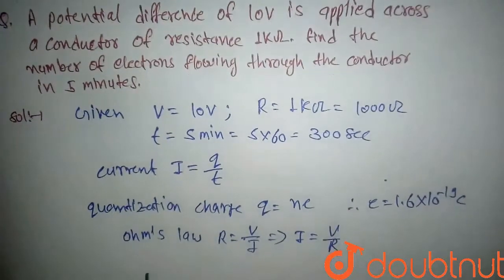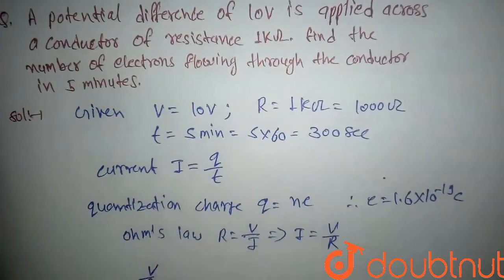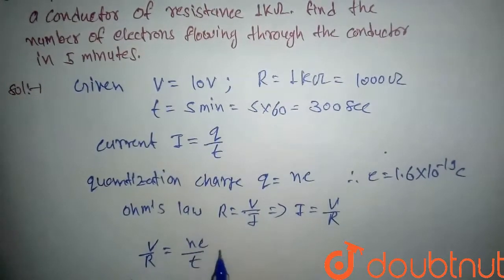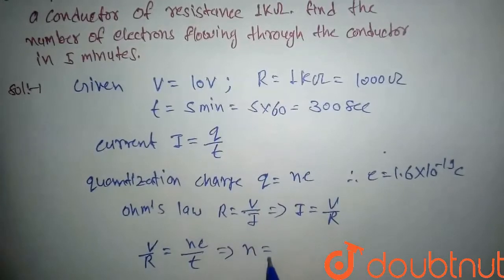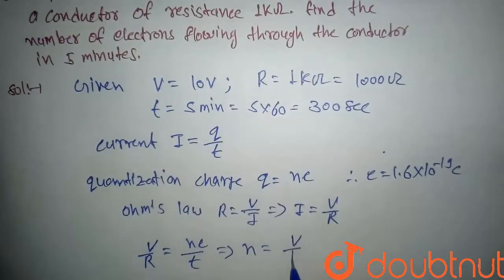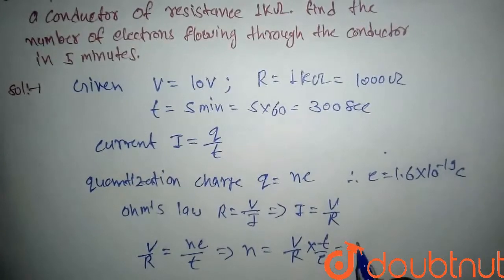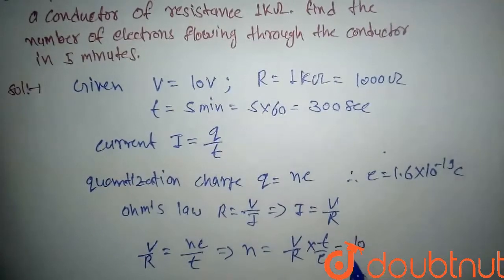So if we put the values, we will get V/R = ne/t. So here, n comes out to be (V/R) × (t/e). So just put the values: voltage is 10, resistance is 1000.